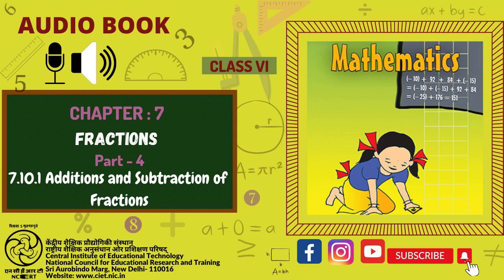Color 5 of its boxes in green. What fraction of the whole is the green region? Now, color another 4 of its boxes in yellow. What fraction of the whole is this yellow region? What fraction of the whole is colored all together? Does this explain that 5 upon 28 plus 4 upon 28 is equal to 9 upon 28?